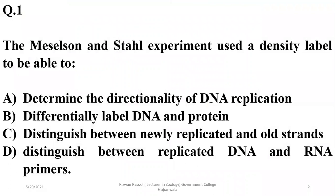Question number one: the Meselson and Stahl experiment used a density label. Meselson and Stahl used density labeling of DNA to determine the difference between the density of different kinds of DNA. To distinguish between newly replicated and older strands in their experiment, instead of labeling proteins or determining the direction, they used that label to distinguish between newly replicated and old strands of the DNA.